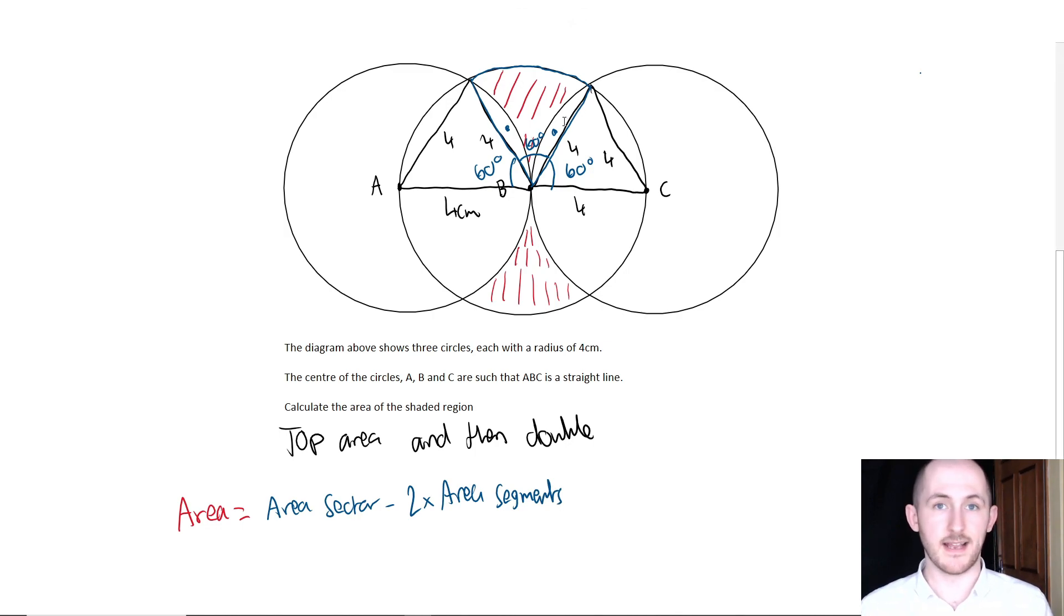First of all, let's work out the area of the sector. The area of the sector is: you take the angle that it subtends, which is 60 degrees in this case, divided by 360. That gives you the fraction of the sector that it is for the whole circle, times by pi times the radius, which in this case is 4 squared.